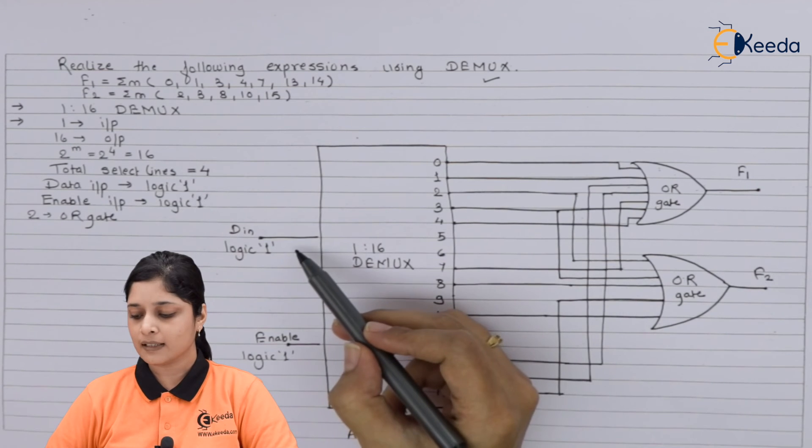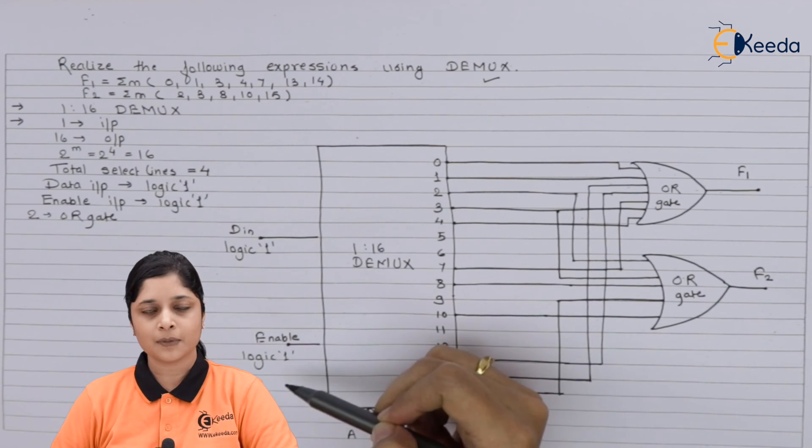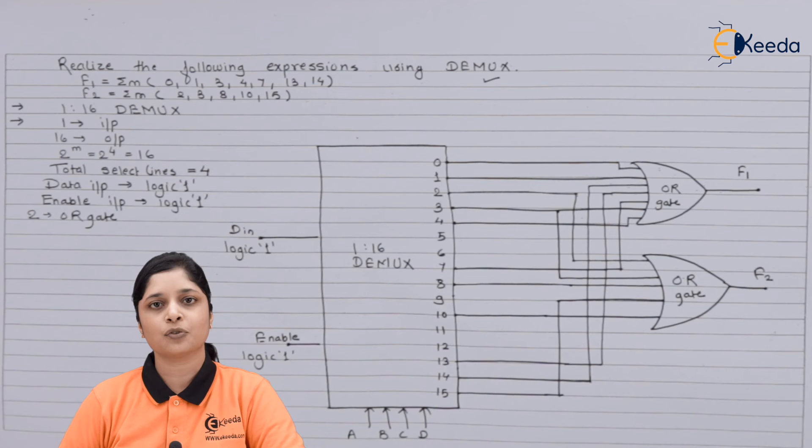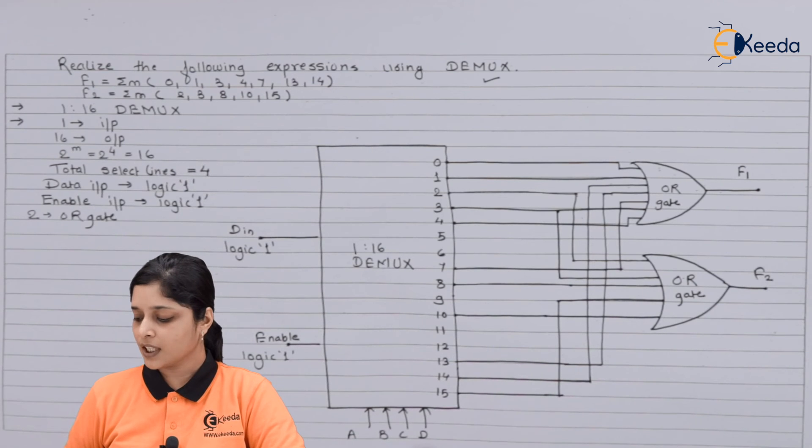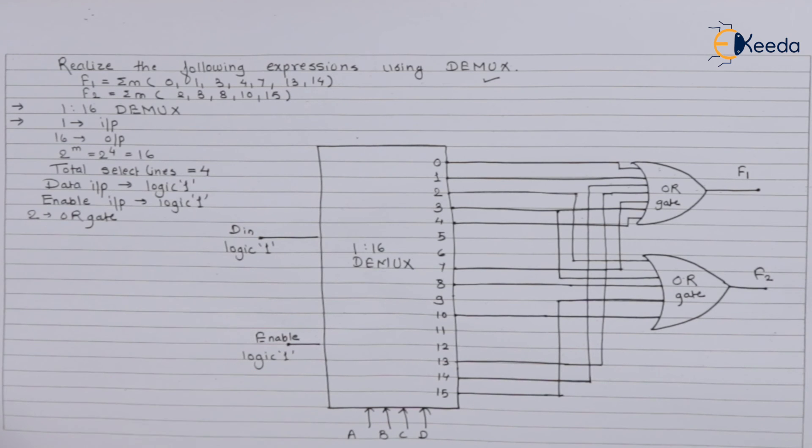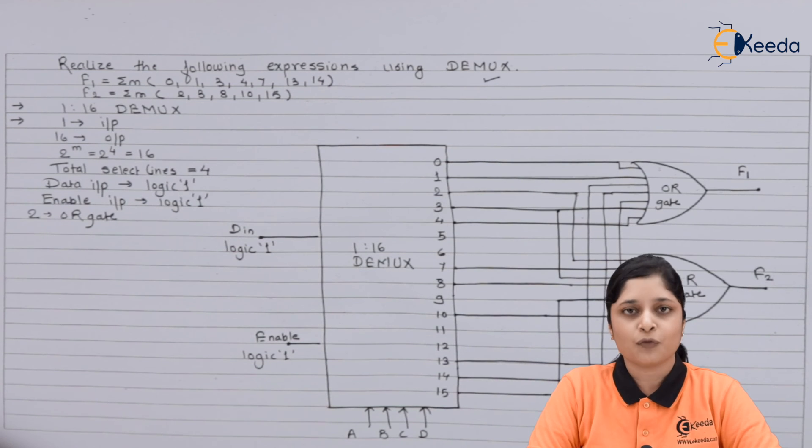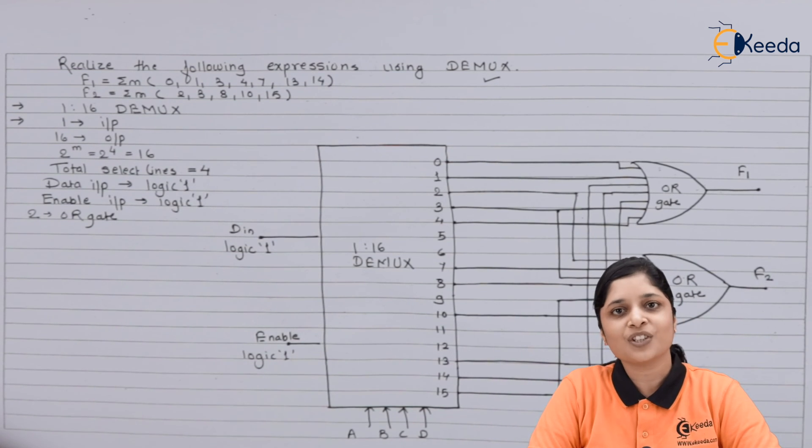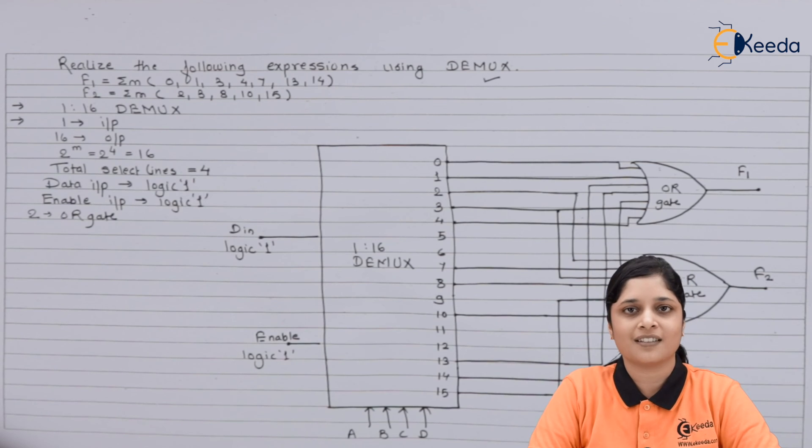So we have done with the given expressions of f1 and f2. These are all the connections you have to do. Then this is your input enable terminal, always you have to connect it to logic 1. After that four select lines are also present over here and 16 outputs. In this way we can solve the numerical based on the demultiplexer. Thank you for watching this video, stay tuned with Ikeda and subscribe to Ikeda.